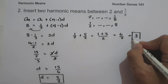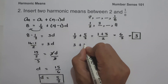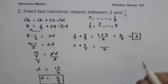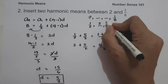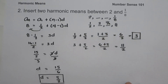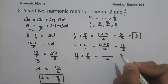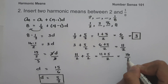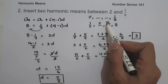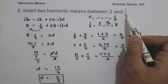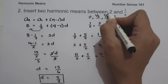The third term is 3 plus 5 over 2. Using denominator 2, that is 6 plus 5, giving us 11 over 2. To check: 11 over 2 plus 5 over 2 is 16 over 2, which is 8 — our last term. So the arithmetic means between one half and 8 are 3 and 11 over 2. The two harmonic means between 2 and one over 8 are the reciprocals: one third and 2 over 11.